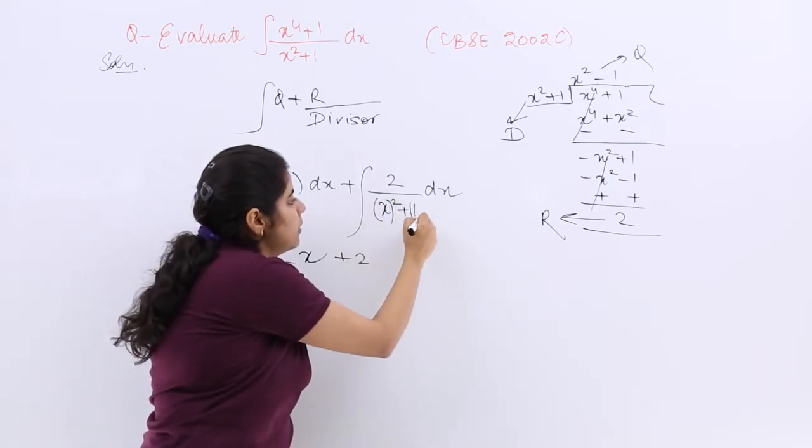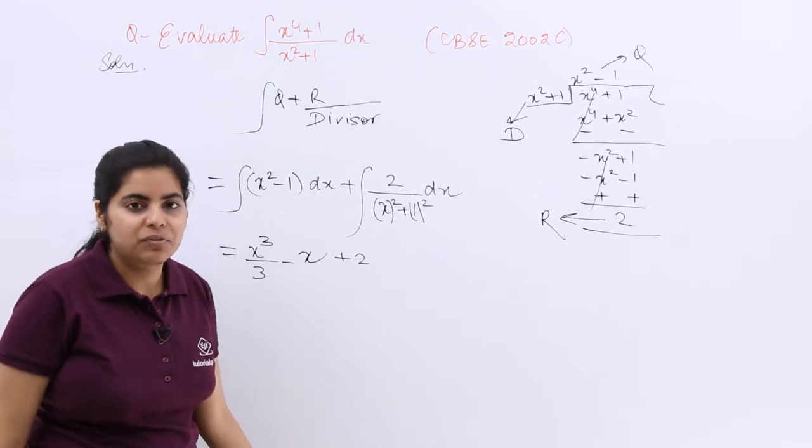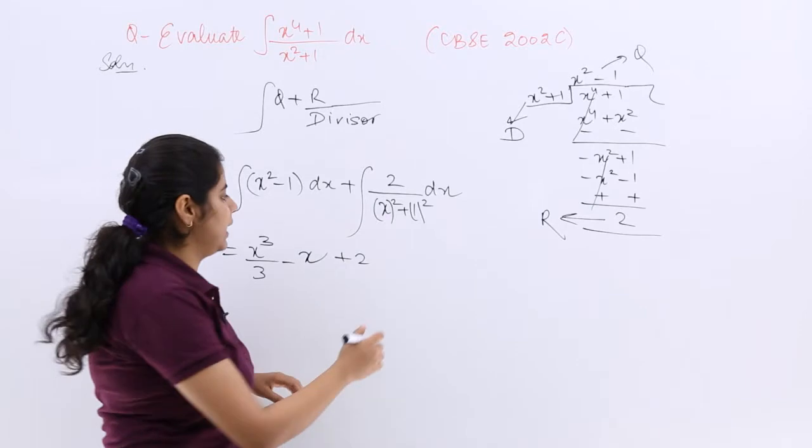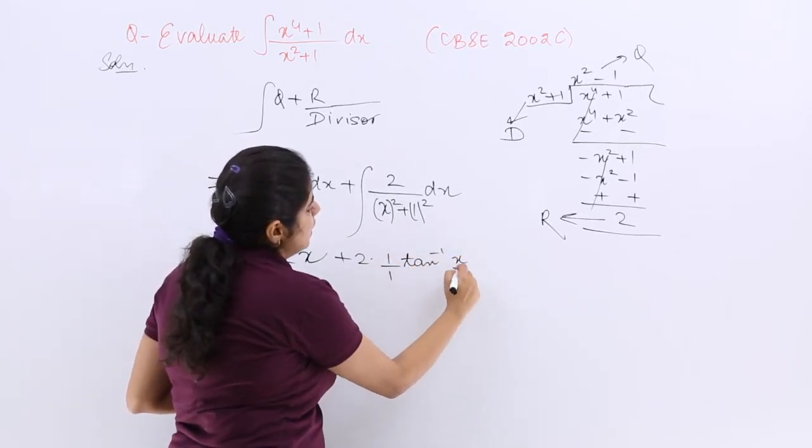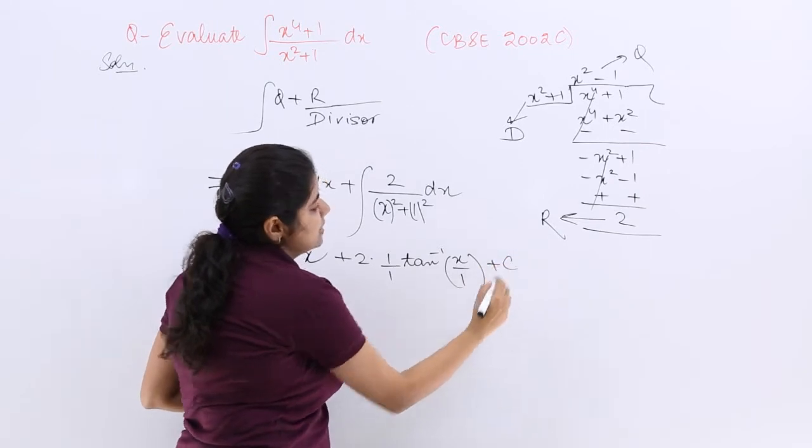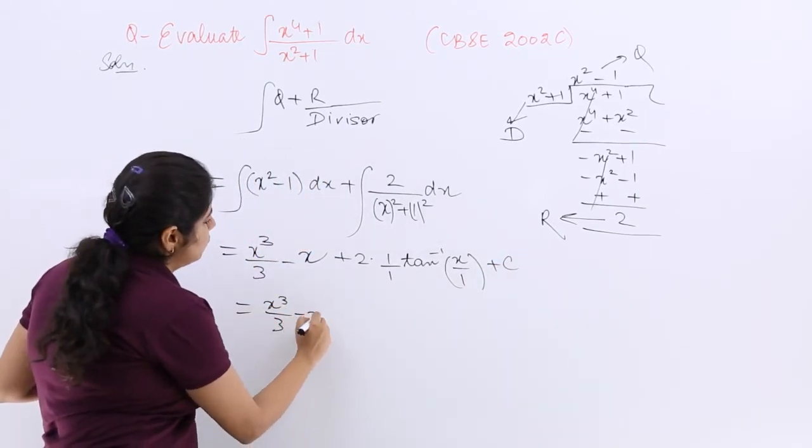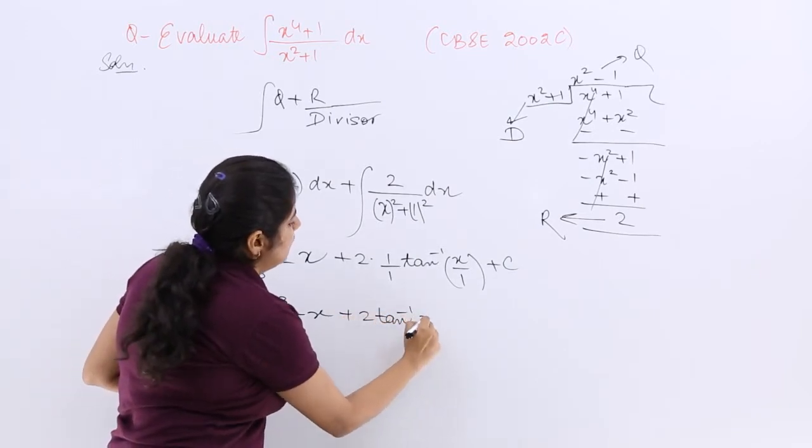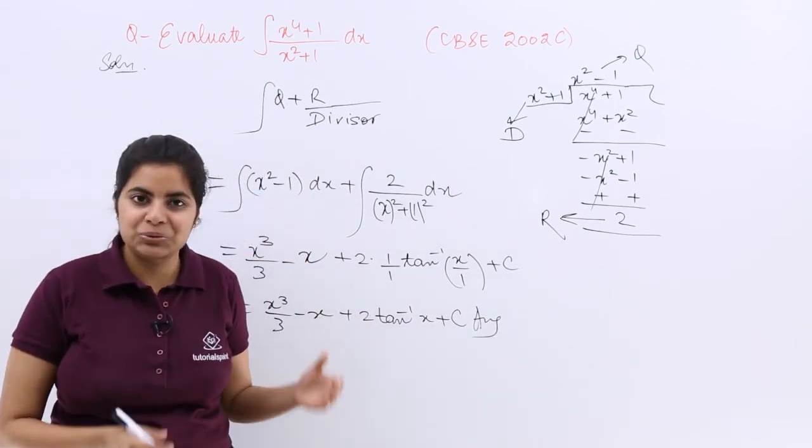It is something called as the whole squares addition. And you know 1 upon x squared plus a squared is 1 by a tan inverse x by a. So it is 2, 1 by 1 tan inverse x by 1 plus c. Let me write it more clearly. The answer should be x cubed by 3 minus x plus 2 tan inverse x plus c. That is your answer to this question.